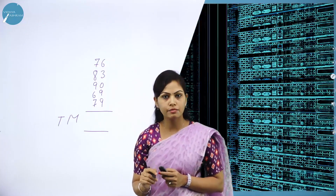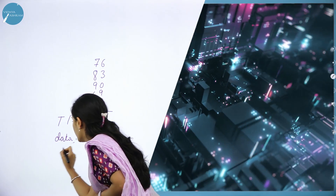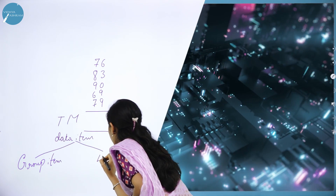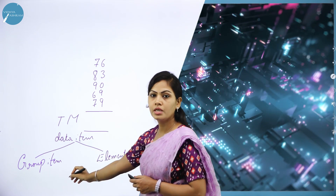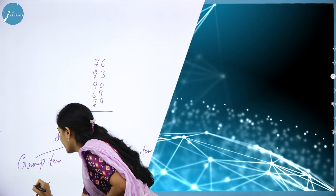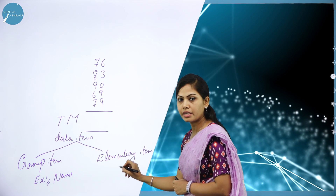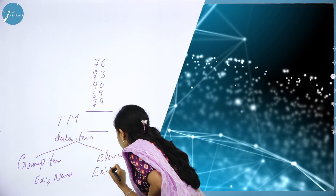A data item can be classified into two types: group item and elementary item. A group item is a data item that can be divided into sub-items. For example, 'name' is a group item because it can be divided into first name, middle name, and last name. An elementary item is a data item that cannot be divided into sub-items — for example, pin code or phone number.